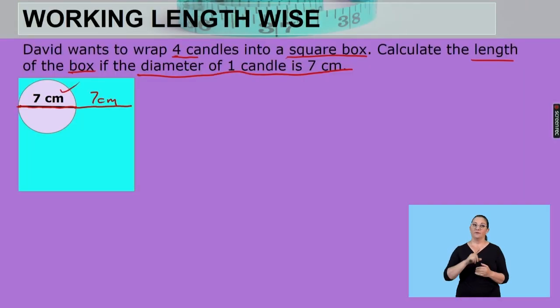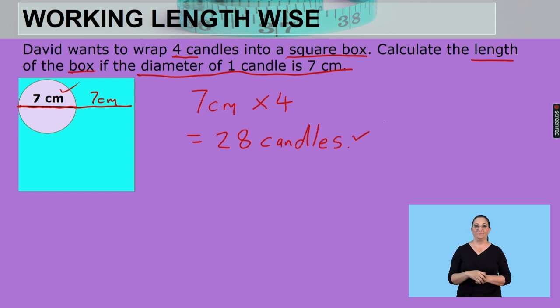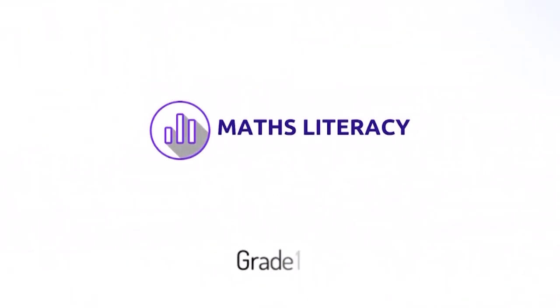So what we've got to do is we want to fit four candles into this box lengthwise. So if we're fitting four candles, it'll be seven centimeters. Seven centimeters is one candle. Multiply that by four. We will then fit in 28 candles. Excellent. Nice work. Well done. Let's take a short break. When we get back, we'll pick up where I left off. See you in a bit.